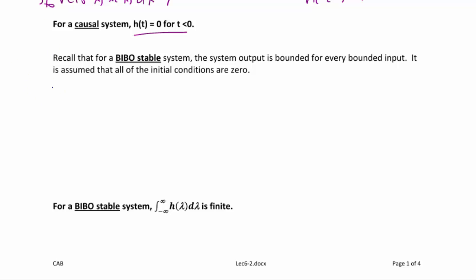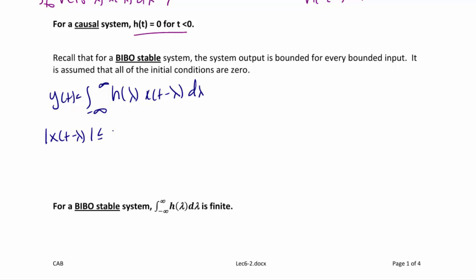Let's draw the convolution integral in order to demonstrate BIBO stability. y(t) equals the integral from negative infinity to positive infinity of h(lambda) times x(t minus lambda) d-lambda. But remember, we have a bounded input, so x(t minus lambda) must be less than or equal to some bound N. So the magnitude of y(t) must be less than or equal to N times the integral from negative infinity to positive infinity of h(lambda) d-lambda, and since it's bounded, that must be less than M.